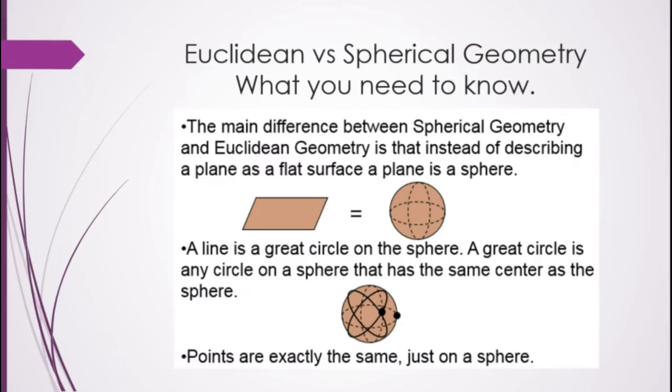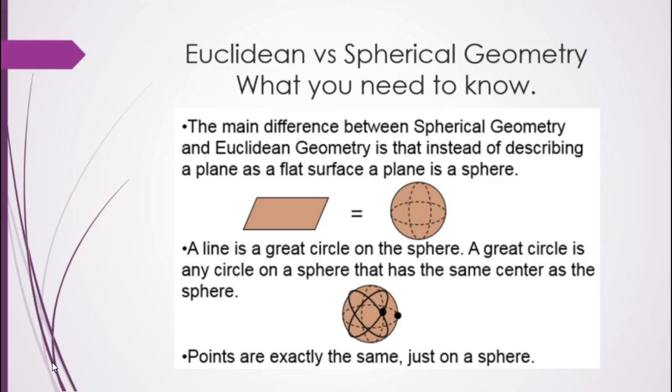So, what you need to know? As I go through these slides, fill in the blanks on your handout. The main difference between spherical and Euclidean geometry is that in Euclidean geometry, we said a plane is a flat surface. In spherical, a plane is a sphere. It's like the surface of the Earth.